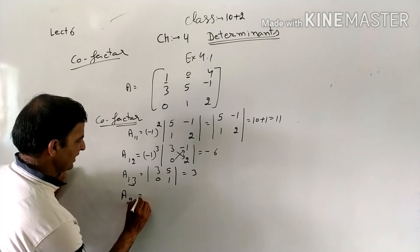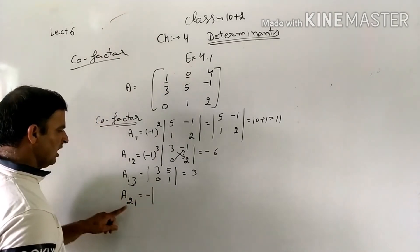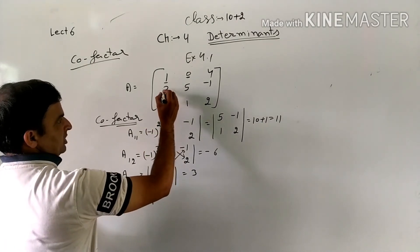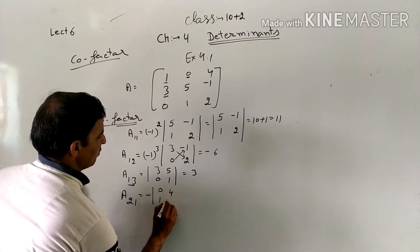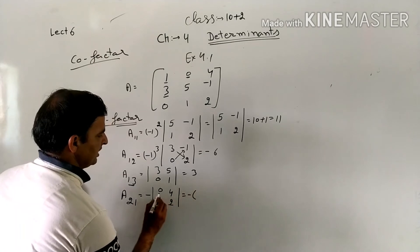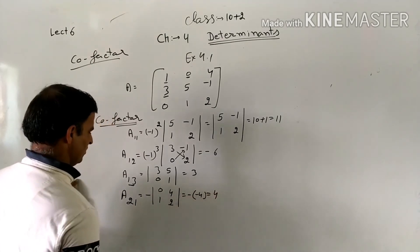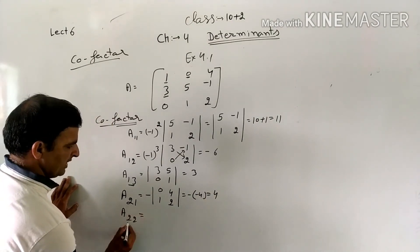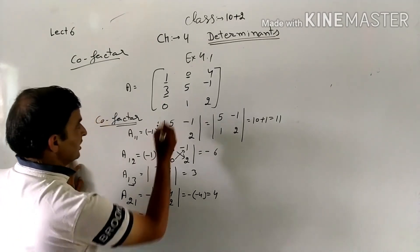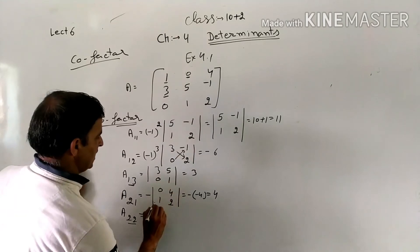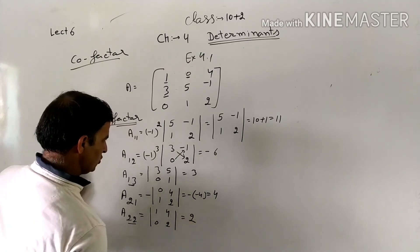A21: sum 2+1=3, odd, so minus applies. Position 2,1. Deleting its row and column leaves [3, 0; -1, 2]. Minus × (3×2 - 0×(-1)) = minus × 6 = -(-wait). Zero minus 4 = -4. So A21 = -4. A22: sum 2+2=4, even, no minus. Deleting leaves [1, 0; 4, 2], determinant = 2. A22 = 2.